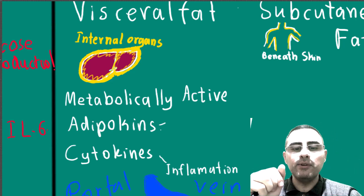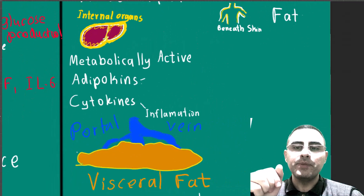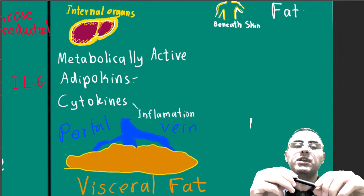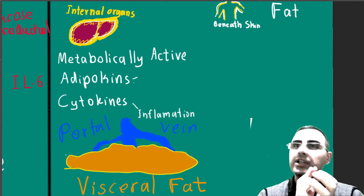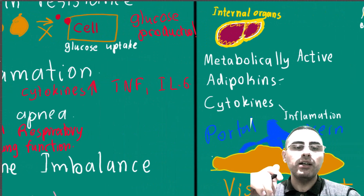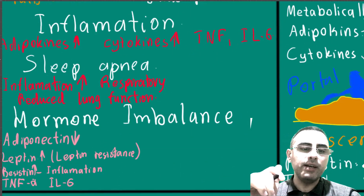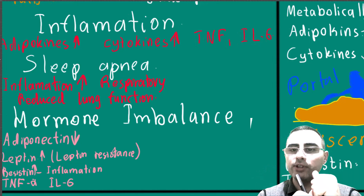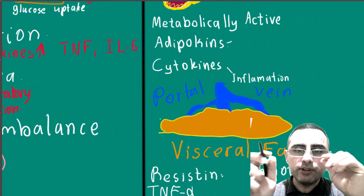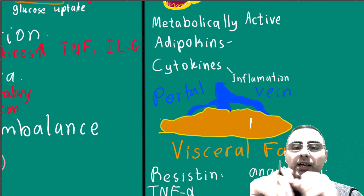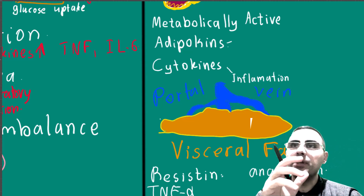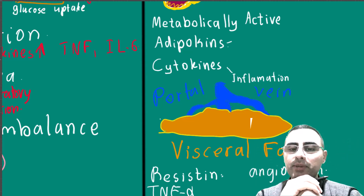Now let's define what metabolically active means. Visceral fat produces several hormones called adipokines. Adipokines is a collective name for several hormones including leptin, resistin, and adiponectin. Visceral fat also produces cytokines — pro-inflammatory agents — which cause inflammation.